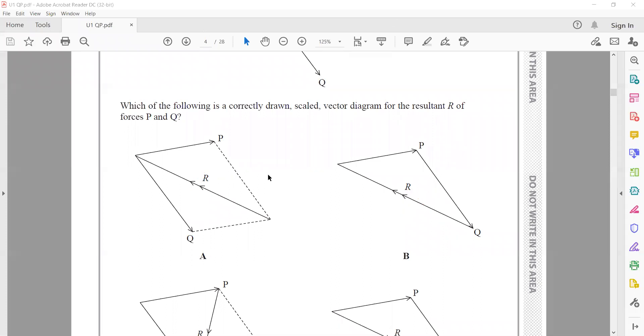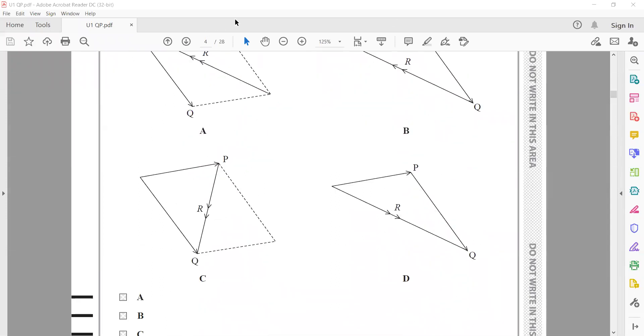Using parallelogram or triangle method, the resultant won't change. Here the resultant direction is given wrong in one option. The resultant should be the diagonal intersection of the two vectors from the starting point, so the direction should be this way. That's why C is wrong, and the correct answer is D.